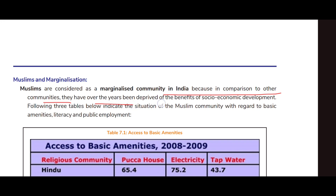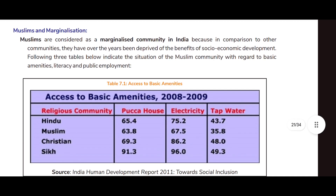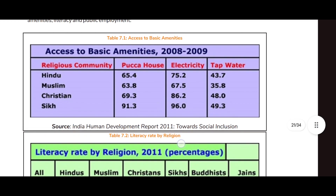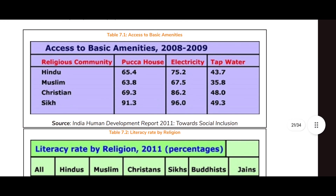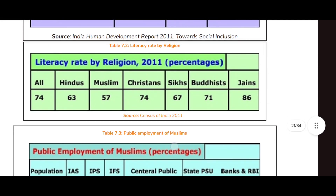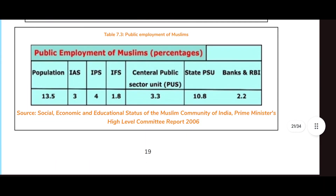Muslims and marginalization: Muslims are considered a marginalized community in India because, in comparison to other communities, they have over the years been deprived of the benefits of socioeconomic development. The following tables indicate the situation of the Muslim community with regard to basic amenities, literacy, and public employment, according to the Human Development Report 2011 towards Social Inclusion.